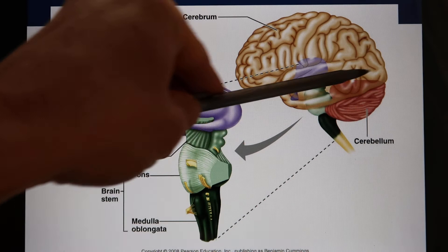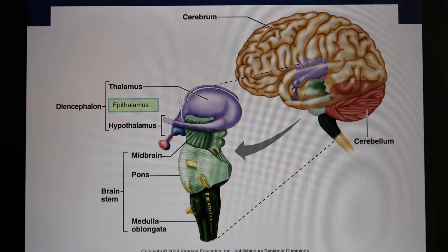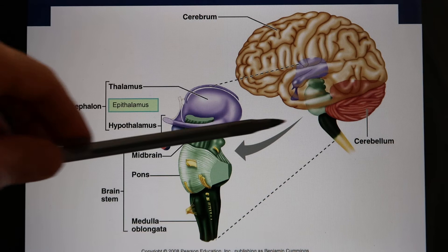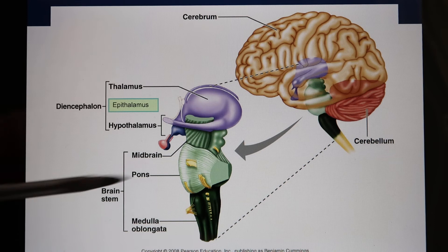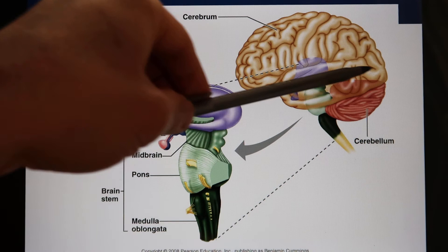The cerebellum functions like a calculator — its job is to modify your movement, making it smoother. Initiation of movement starts from the motor cortex, but the cerebellum refines it. Athletes with very good balance have a well-developed cerebellum. This is also the area affected by alcohol — when you get drunk and walk unsteadily, that's the cerebellum being compromised.